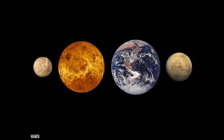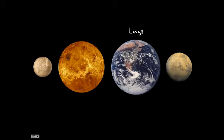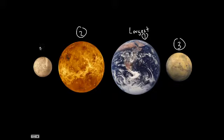Something else you should know for the test is the order of the terrestrial planets from largest to smallest. Earth is the largest, number one. The second largest is Venus. Third is Mars. And fourth is Mercury — this is the smallest. That's just for the terrestrial planets.